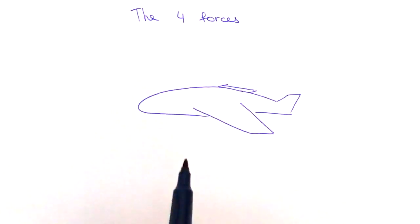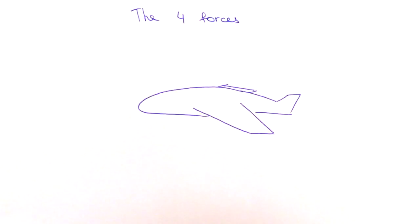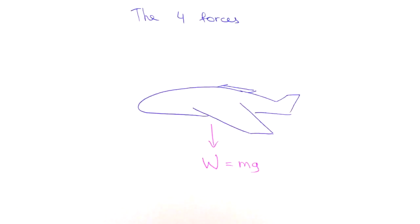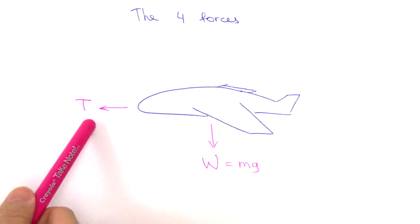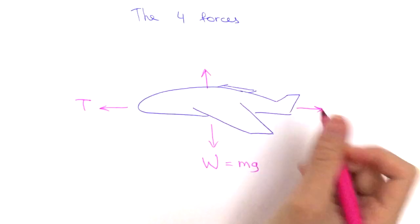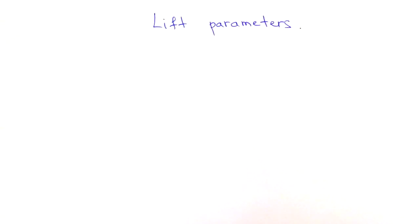Let's recap from the last video what we learned about the four forces acting on the aircraft. Weight is equal to mass multiplied by gravitational acceleration. Thrust we'll cover in more detail in a future video. The two aerodynamic forces are lift and drag, and today we'll learn how to find their values. It was experimentally determined that lift and drag depend on dynamic pressure.